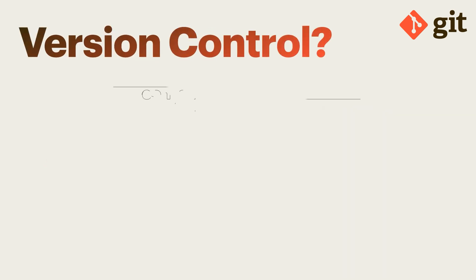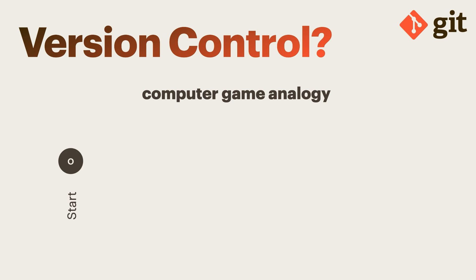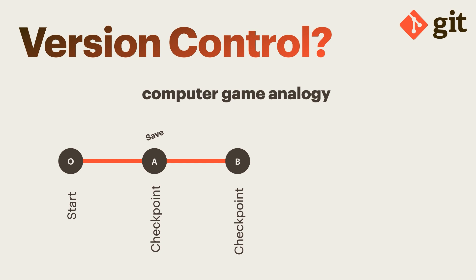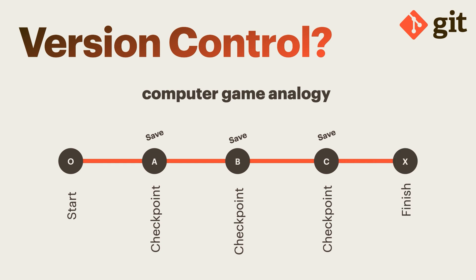First, let's understand what version control is with a game analogy. Suppose you start a game at level zero and after some time you reach checkpoint A. You save your game because you don't want to start from zero again. Then you reach checkpoint B and save again, so you don't have to restart from checkpoint A. You continue to checkpoint C, save again, and finally finish your game. This is the idea behind a version control system.